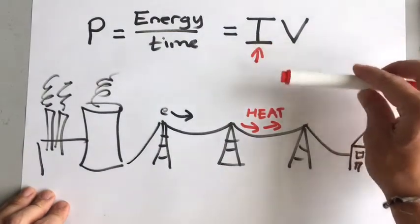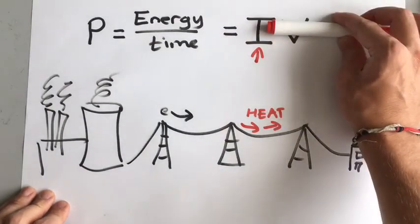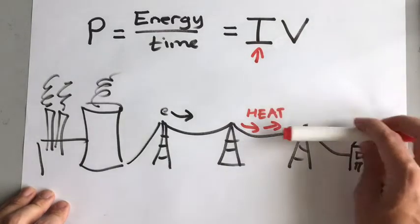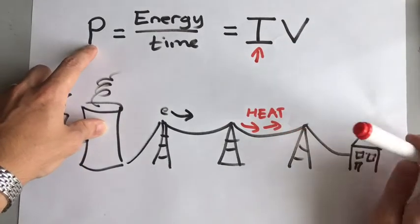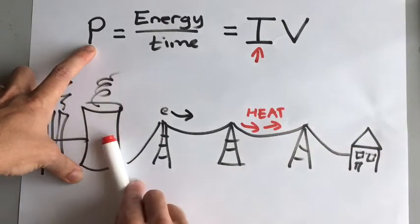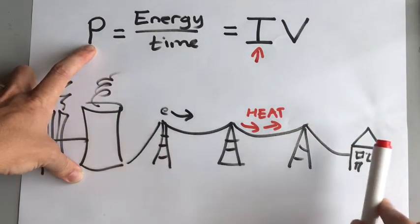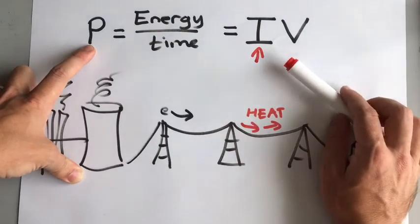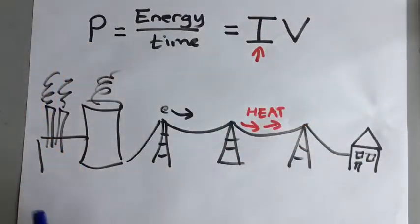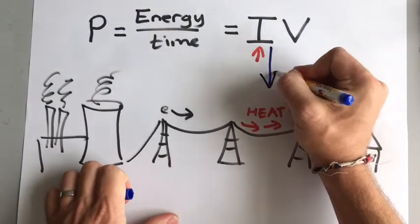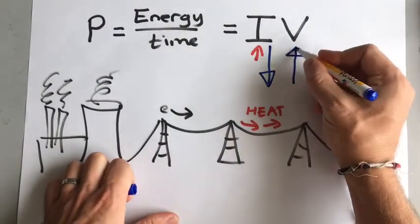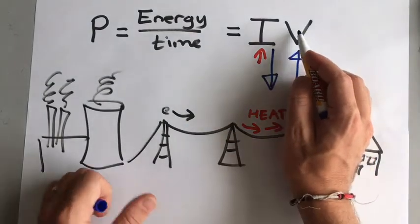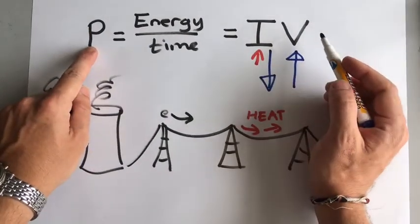The more current, the more heat. The less current, the less resistance, and so the less heat. But remember, we want to keep the power the same — we want to have the same power leaving the station as there is in your house. So the way that we do that: if we bring down the current, we have to bring up the voltage. Bring down the current, bring up the voltage, and the power stays the same.